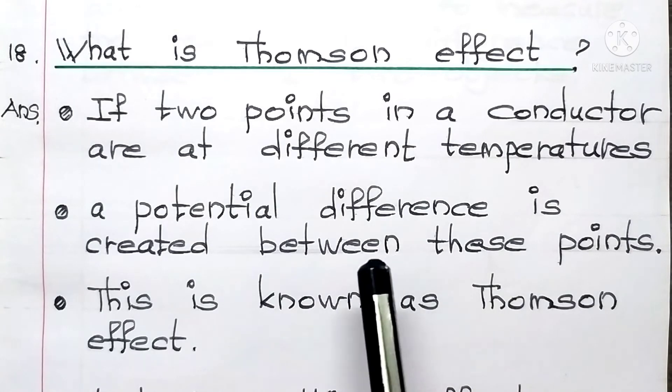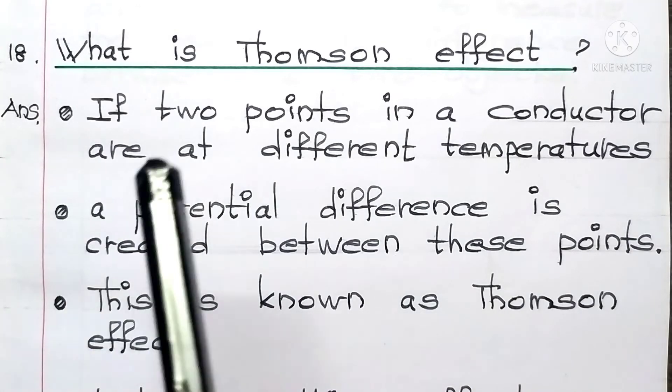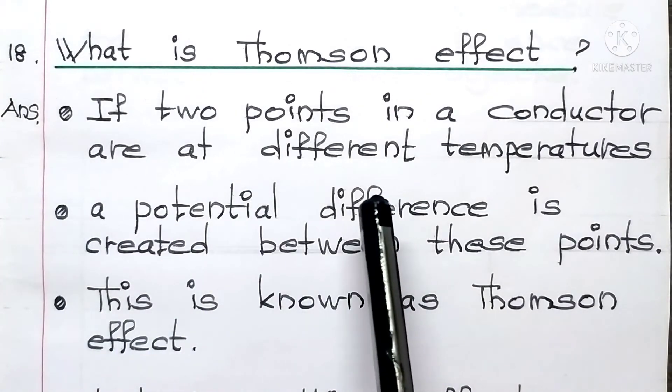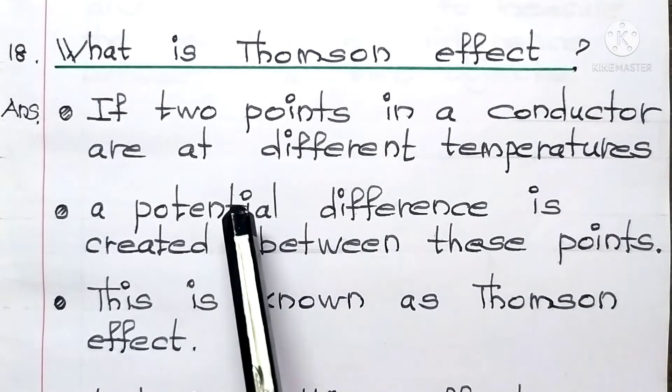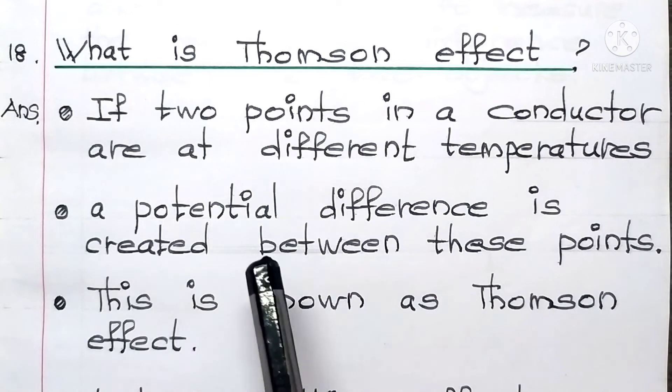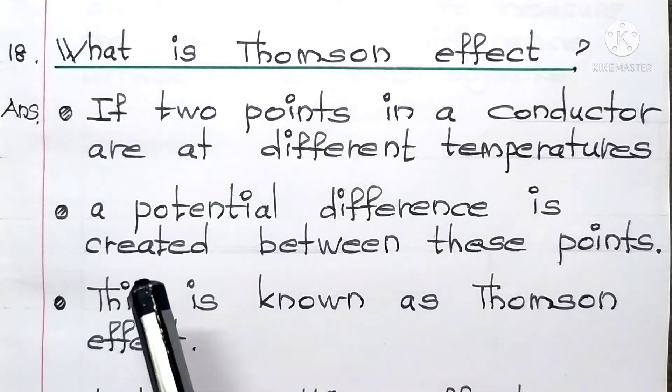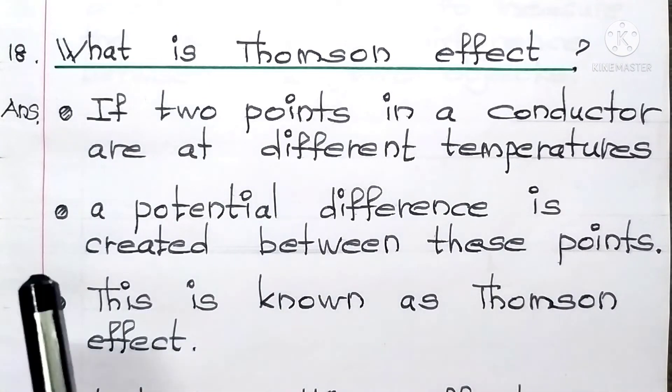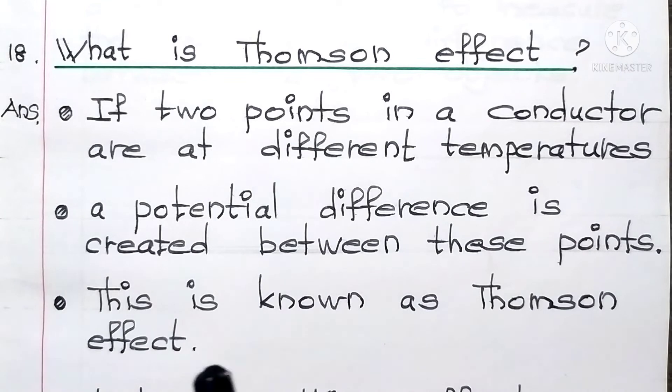A conductor is taken and any two points of the conductor are maintained at different temperatures, then a potential difference is created between these two points. That means one point is at a higher potential and the other point is at a lower potential. This effect is known as Thomson Effect.